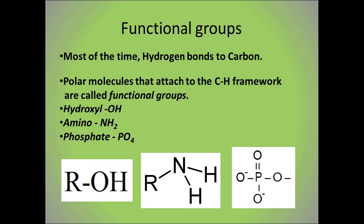A carbon-hydrogen framework and the functional group attached to it is called a monomer. When you put monomers together, you get polymers or macromolecules. There are three types of functional groups: hydroxyl, which is OH; amino, which is NH2; and phosphate, which is PO4. The R you see in diagrams is representative of the carbon-hydrogen framework. Hydroxyl groups create molecules called alcohols, amino groups create amino acids, and phosphate groups create phospholipids.